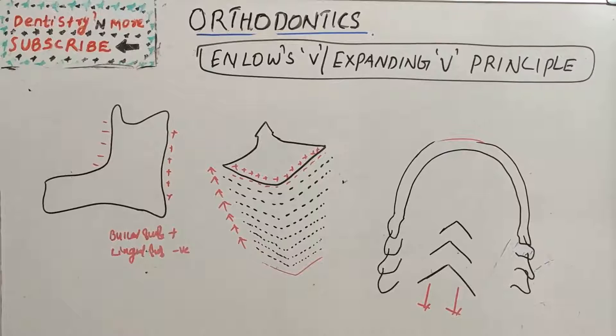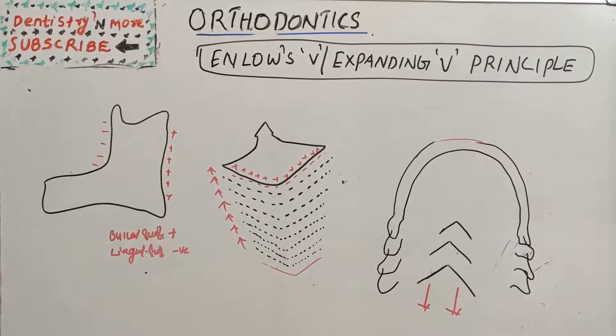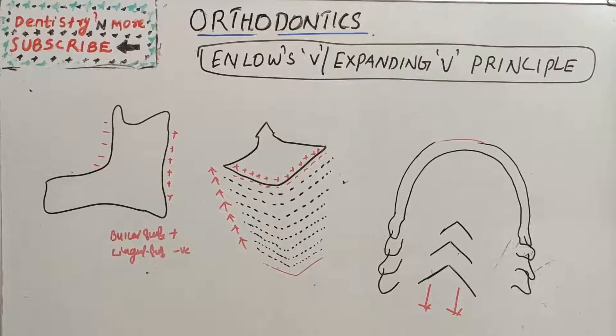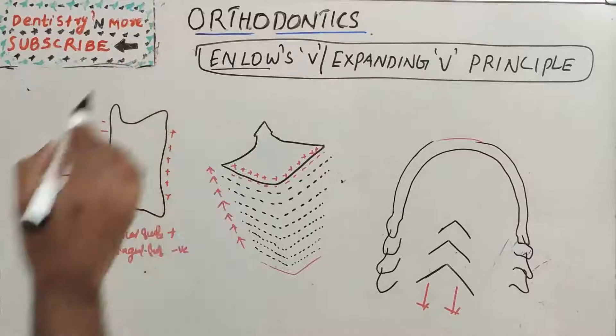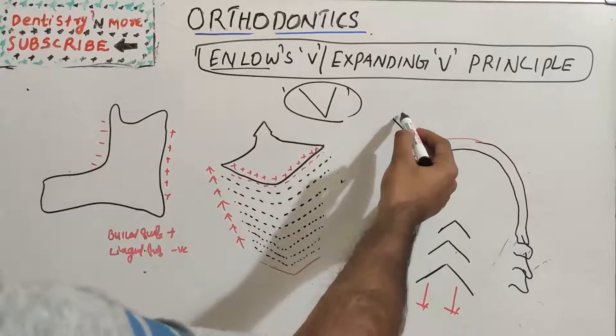Hello everyone, welcome back to another session in Dentistry and More. Today's topic in orthodontics is Enlow's V principle, or expanding V principle. We were talking about the growth pattern of growth — we discussed Scammon's growth curve, cephalocaudal gradient of growth, and the pattern of growth that is drift and displacement. This is a concept by Enlow.